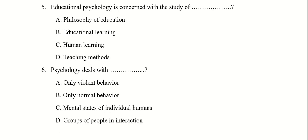Educational psychology is concerned with the study of philosophy of education, education learning, human learning or teaching method. Right answer is C, human learning. Educational psychology deals with only violent behavior, only normal behavior, mental state of individual humans or a group of people interaction. Right answer is C, mental state of individual humans.